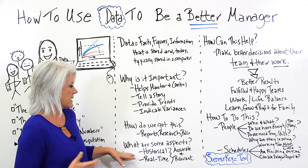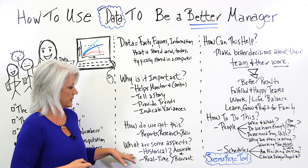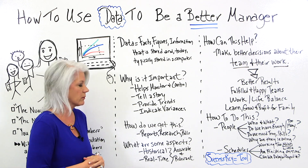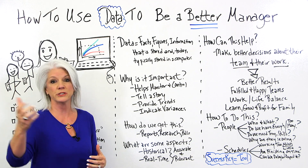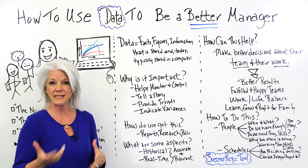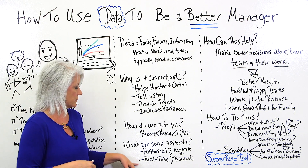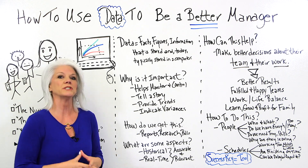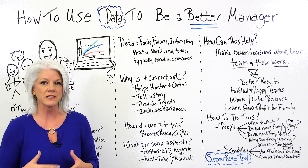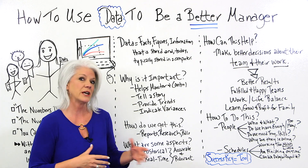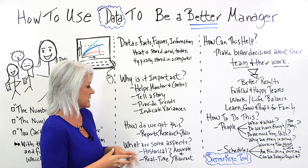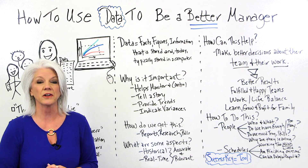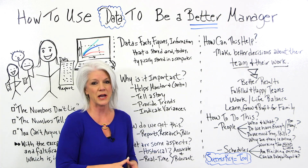What are some aspects of the data that we get? Some data can be historical data, which is helpful to project ahead for things that are similar. There's also real-time data, which helps us make decisions along the way to maybe change course or direction. But the data must be accurate and relevant — we've all heard garbage in is garbage out.